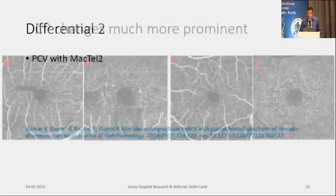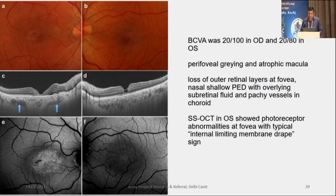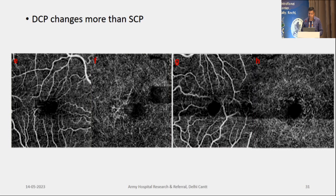The deep capillary changes were much more prominent. In the second case — polypoidal choroidal vasculopathy occurring along with MacTel — OCT angiography showed BVNs. In another case of acute CSC along with macular telangiectasia, OCT on the left showed classical cavitary changes while right showed foveal thinning. OCTA slides clearly showed a lot of deep capillary plexus dilatations, giving the diagnosis of MacTel.